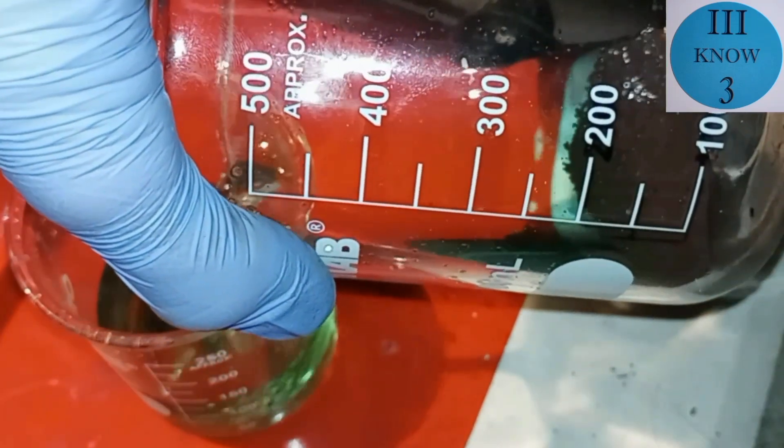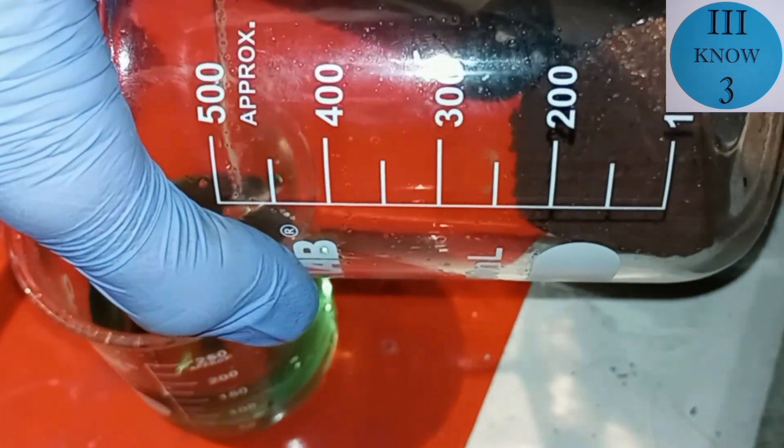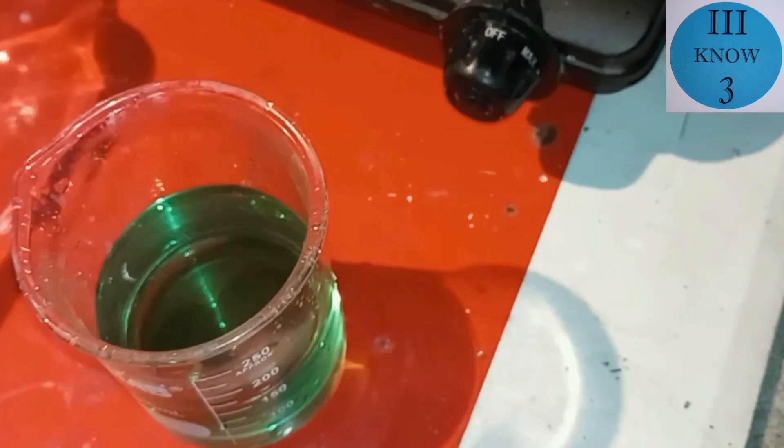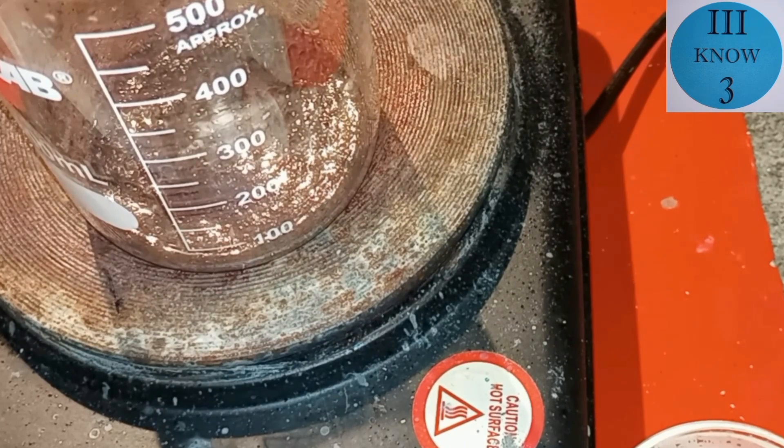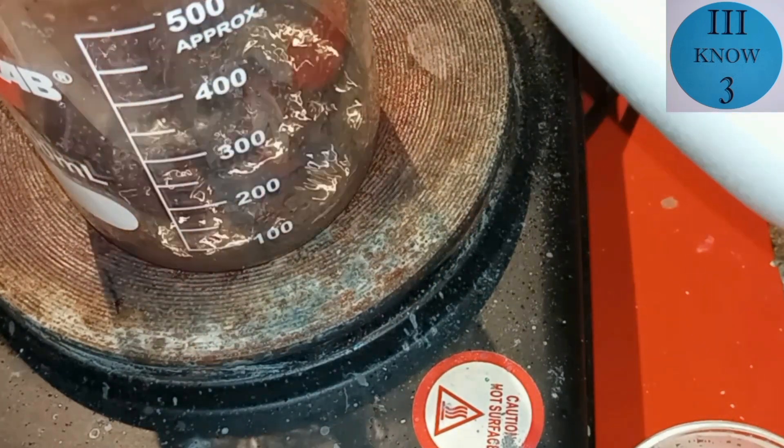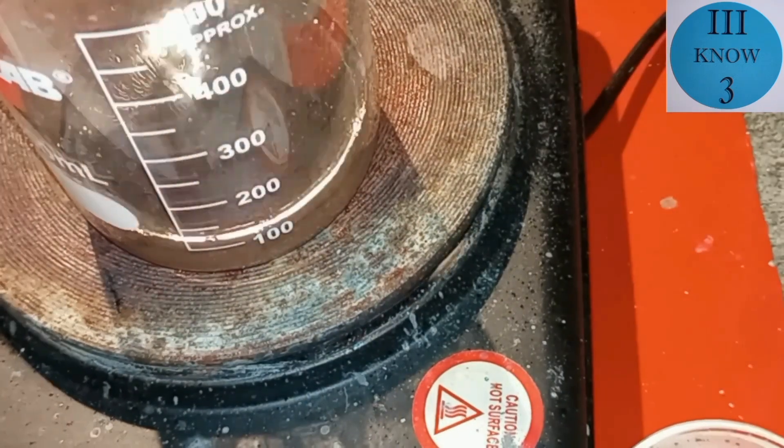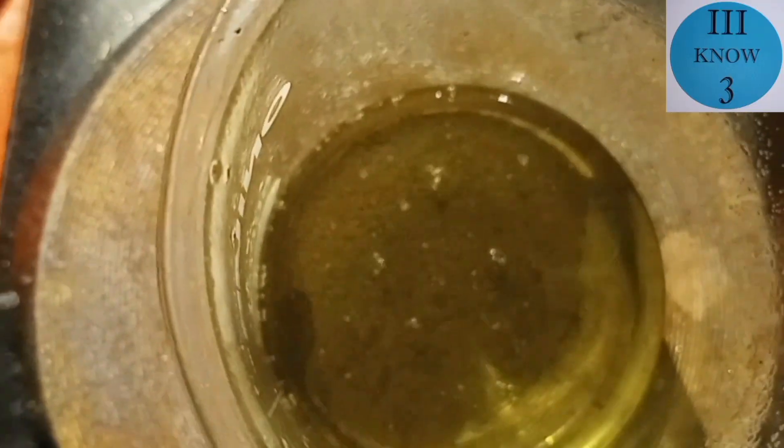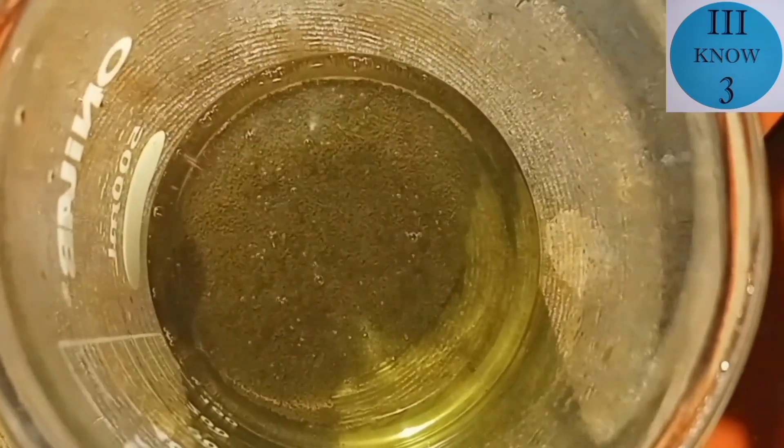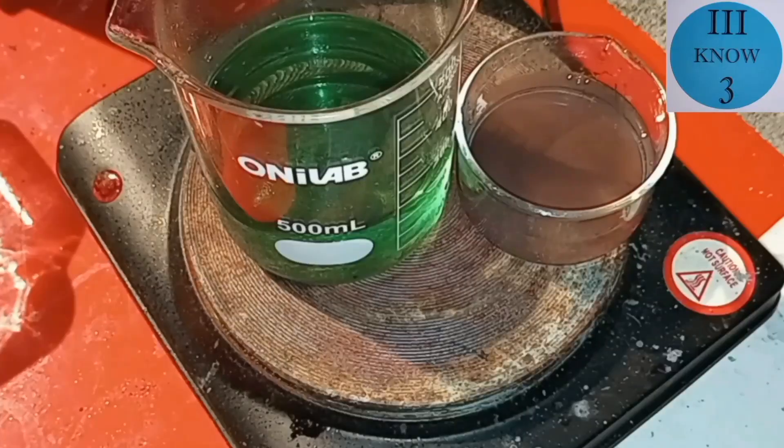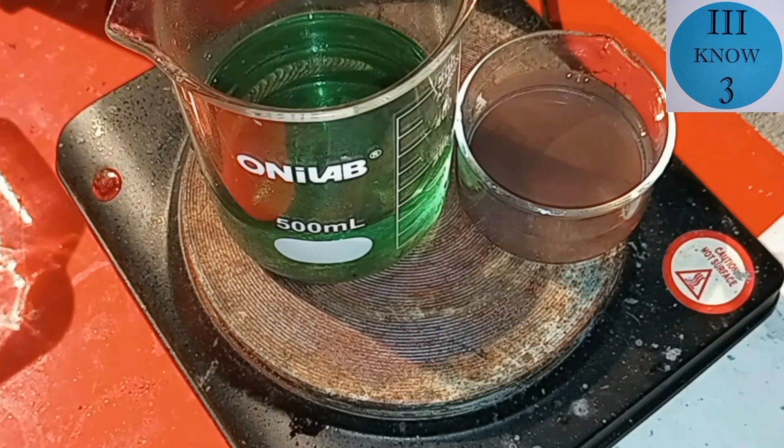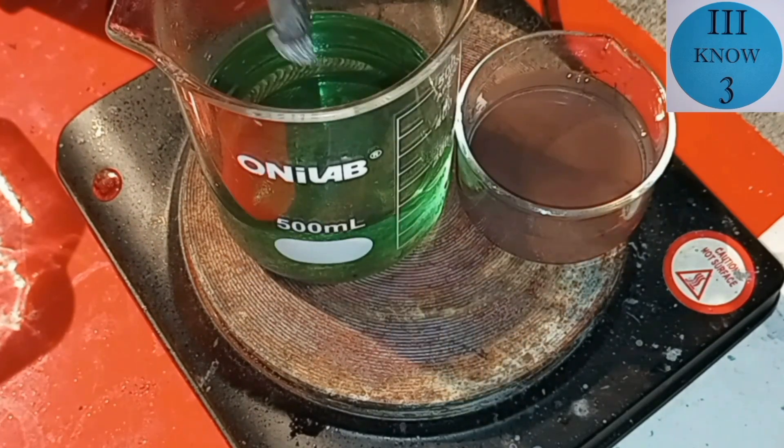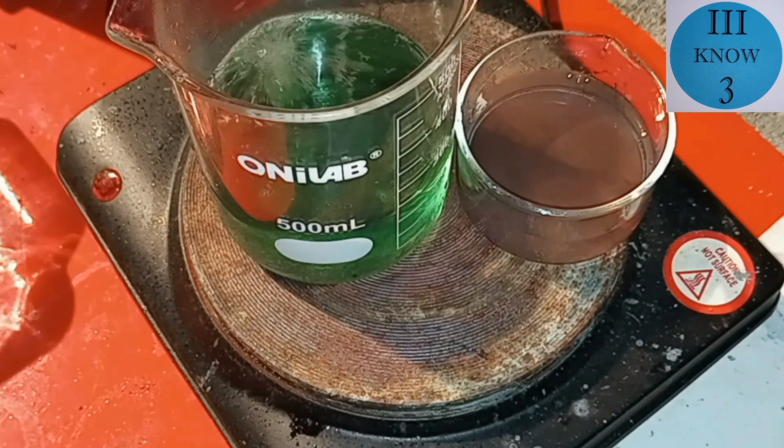So we will drain off the nickel chloride solution and wash the copper. First we'll add a little bit of the hydrochloric acid to see if we can remove any remaining undissolved zinc or nickel. After that we've washed it several times in distilled water and here it is with the nickel chloride.